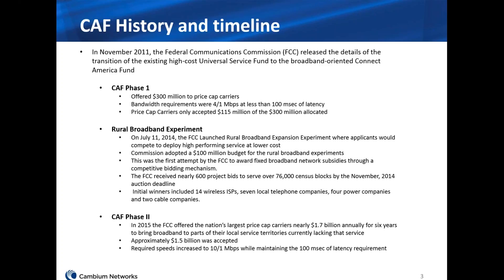Through the positive experience of the Rural Broadband Experiment, they rolled out CAF Phase II, telling the price cap companies that if they refused to serve these areas, others would. In Phase II, $1.7 billion was released. AT&T, CenturyLink, Frontier, and others accepted $1.5 billion of that. They had the right to refuse certain census blocks, so they chose the ones they wanted and left the others open. Those remaining census blocks will be available for the reverse auction.